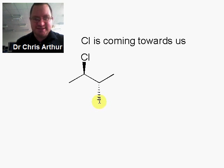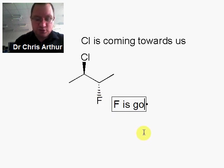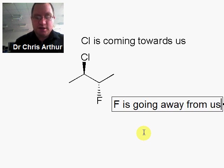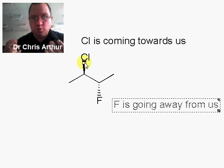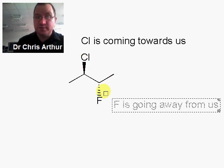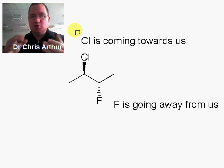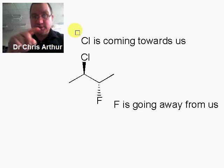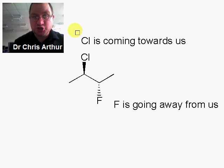If something is going away from us — say we now have a fluorine going away from us — we draw that using a dashed wedge. So we have a solid wedge for coming towards us and a dashed wedge for going away from us.